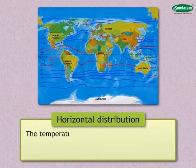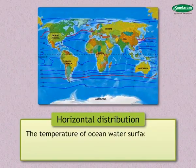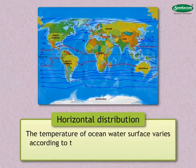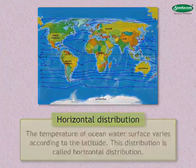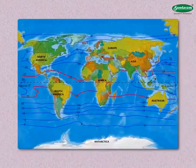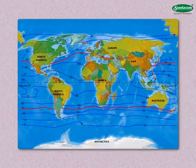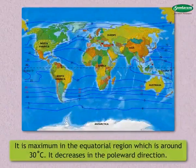Horizontal distribution: the temperature of ocean water surface varies according to the latitude. This distribution is called horizontal distribution. The mean annual temperature of ocean water surface is shown on this map. It is maximum in the equatorial region, which is around 30 degrees centigrade.